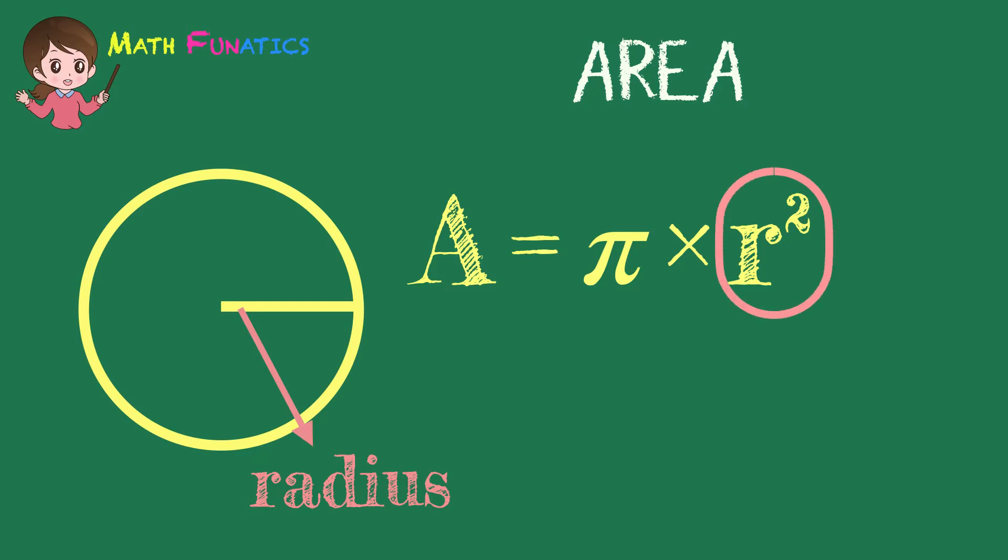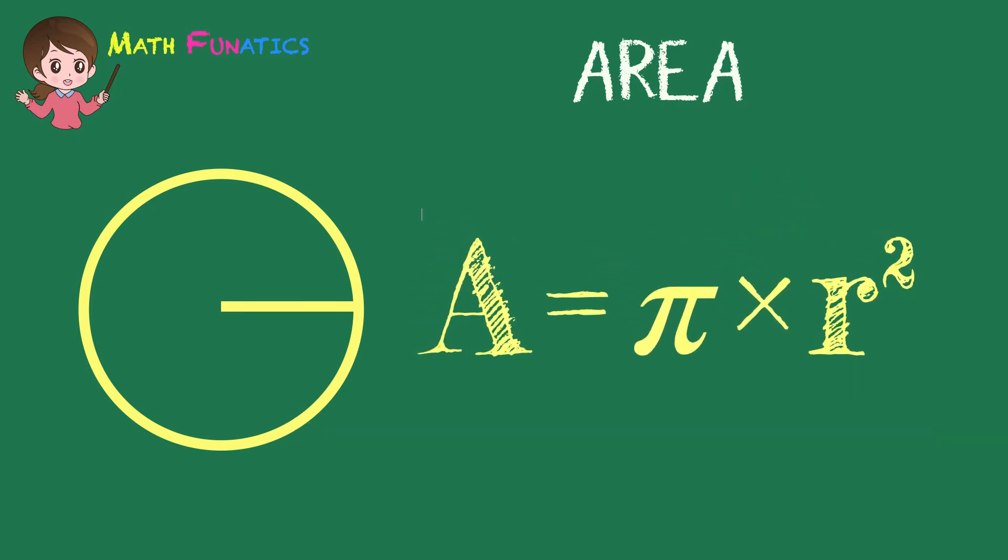What does the square of r mean? It means that the radius has to be multiplied by itself. Again, take note that the formula we will use to solve the area given the radius of a circle is A equals pi times the square of r.